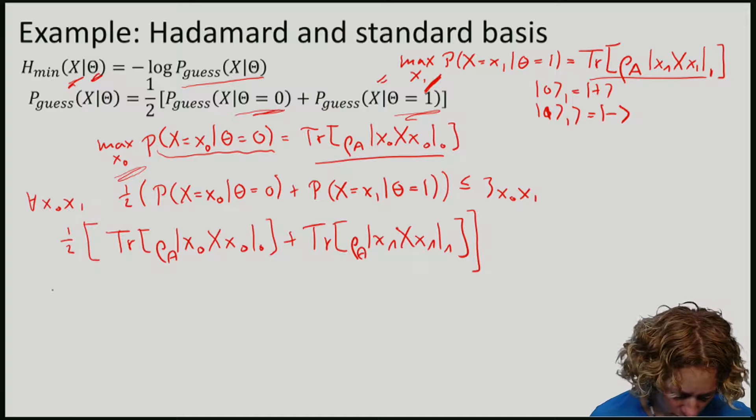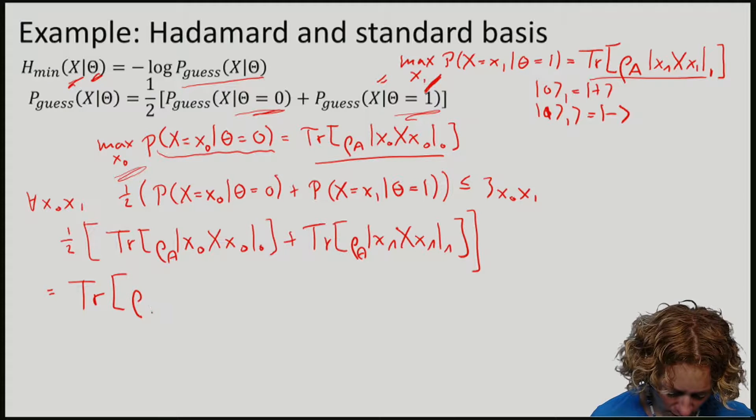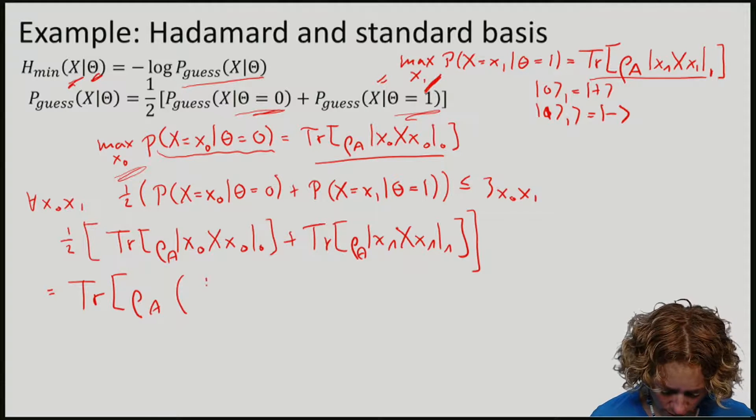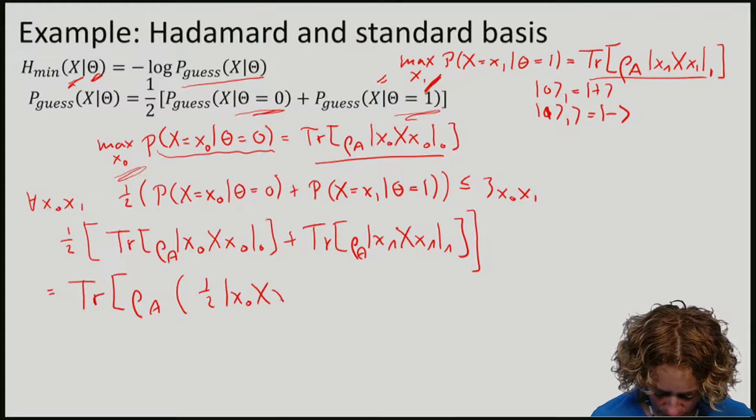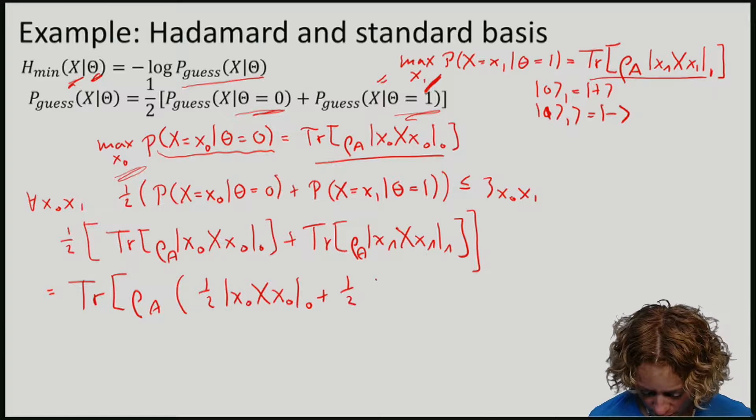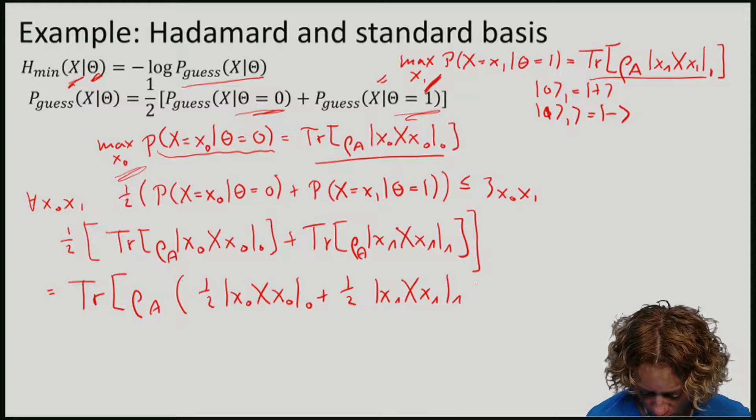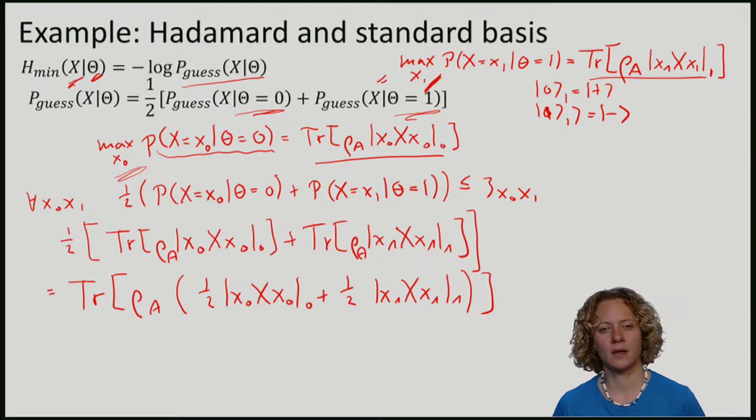So how can I compute this? So that I can group these terms, I can write this as the trace of rho A with half times X0 plus half times X1. So X0 and X1 are in the standard and the Hadamard basis.